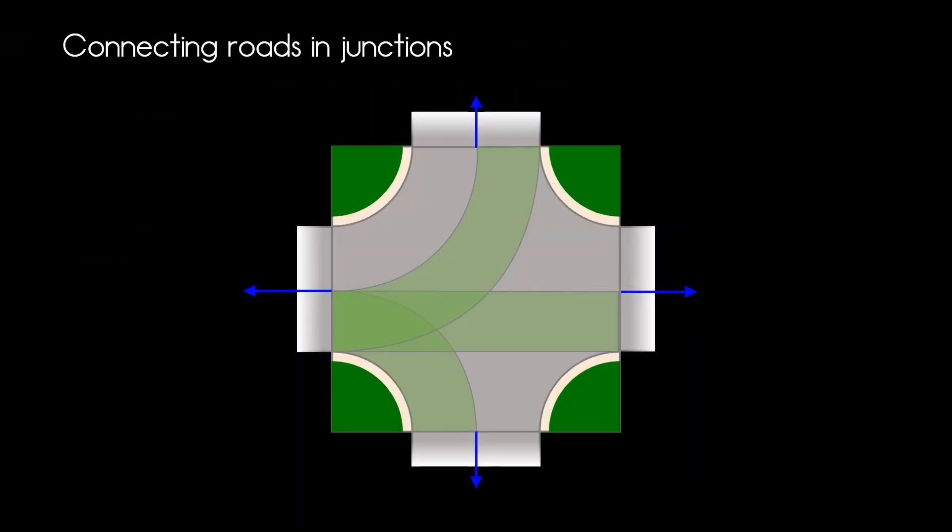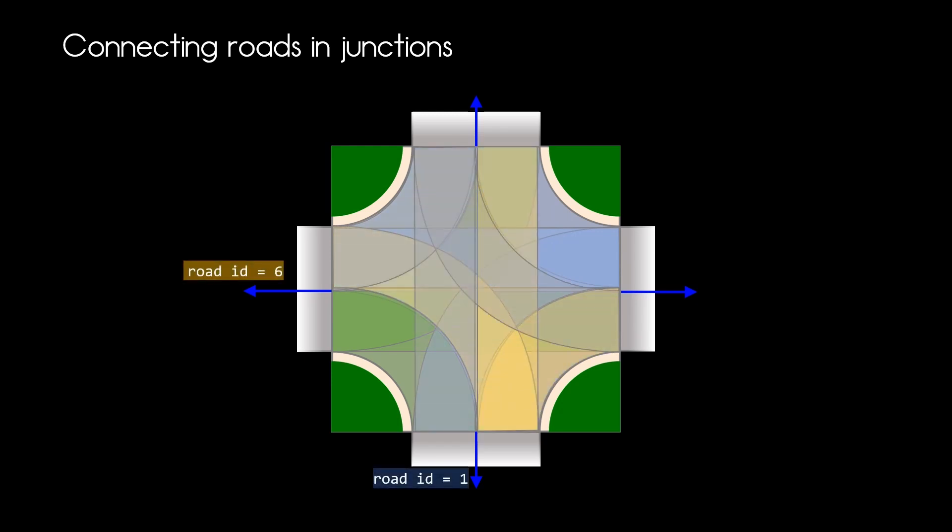And this is how all the connecting roads look like when they overlap. It's quite busy now at the junction, even though it's a quite simple cross junction.